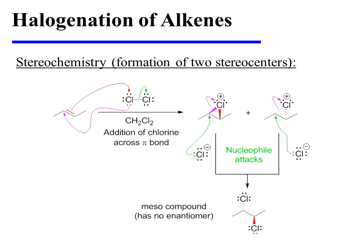The chloronium ion can be opened up by the attack of chloride, resulting in the anti-addition of two chlorines across the alkene pi bond. However, this product happens to be a meso product, and so both enantiomeric chloronium ions converge on the same single reaction product. This meso compound has no enantiomer.